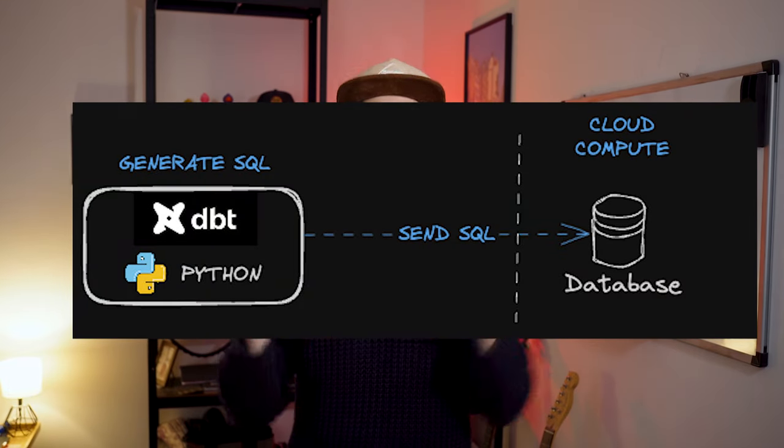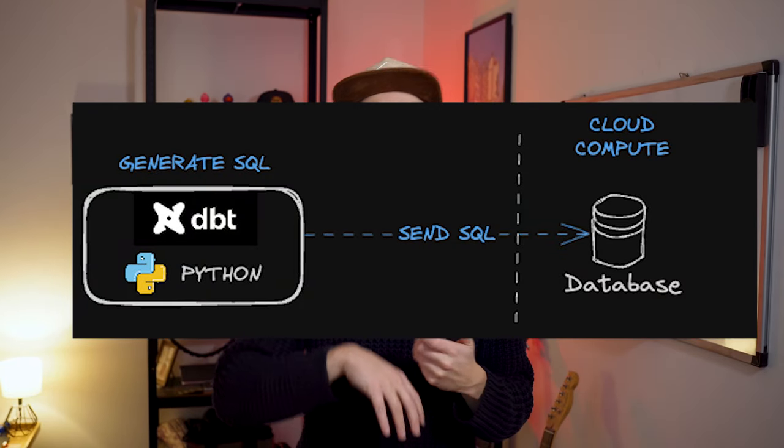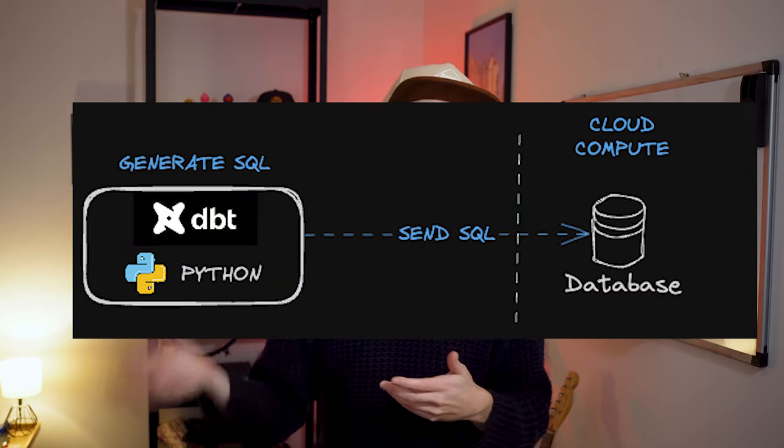For the sake of this tutorial, if you haven't done part one of the project, don't worry — we have some simple raw data available on a public AWS S3 bucket that you can use as input for the transformation pipeline. So let's talk a bit about the DBT and DuckDB integration. DBT is a Python framework that generates SQL and sends it over to a cloud data warehouse for computing.